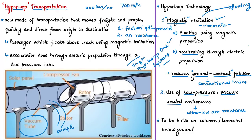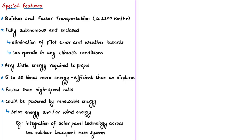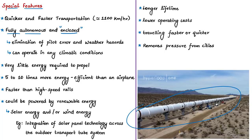This speed is achieved because the system operates in a depressurized environment through magnetic levitation. The transportation system will be built on columns (pillars) or tunneled below ground level to avoid dangerous road-railway crossings and to minimize wildlife disturbance after construction. The system is described as fully autonomous and enclosed, eliminating pilot error and minimizing the impact of weather-related hazards, allowing it to operate in any climatic conditions.